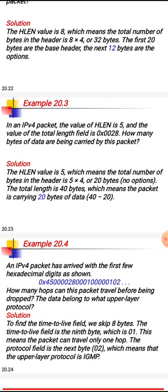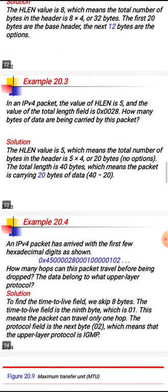Example 3: In an IPv4 packet, the header length field is 5 and the total length field is 0x0028, which equals 40. Since header length is 5, the header size is 5 × 4 = 20 bytes. Assuming no options, the data carried by the packet is 40 minus 20 = 20 bytes.